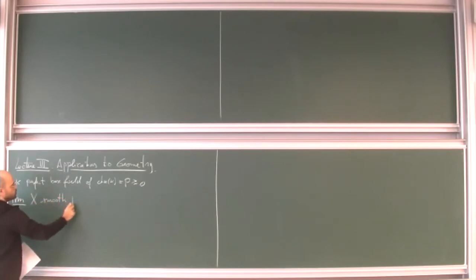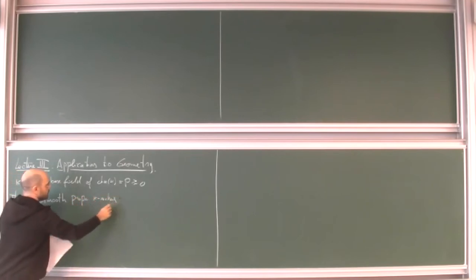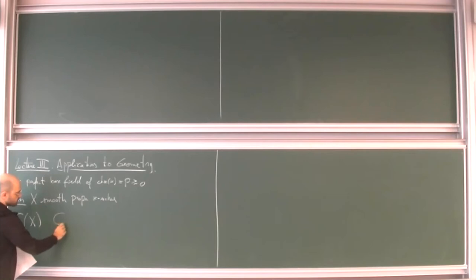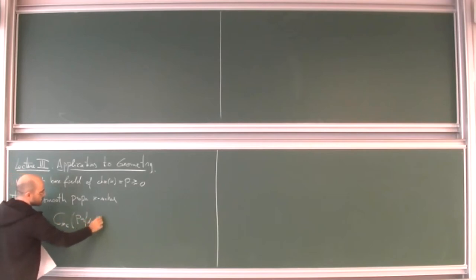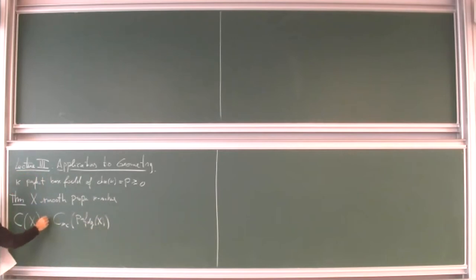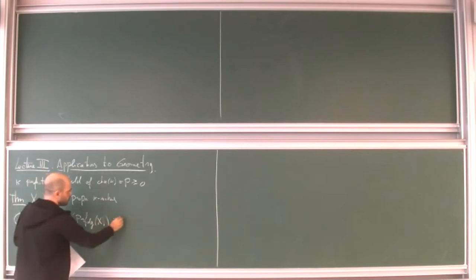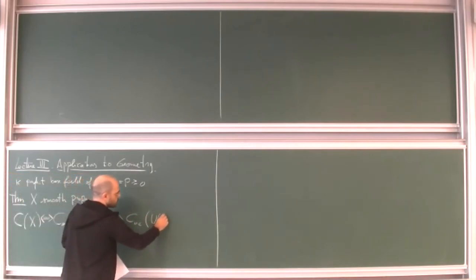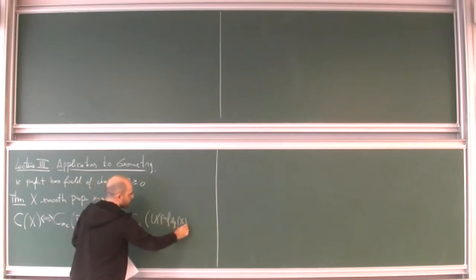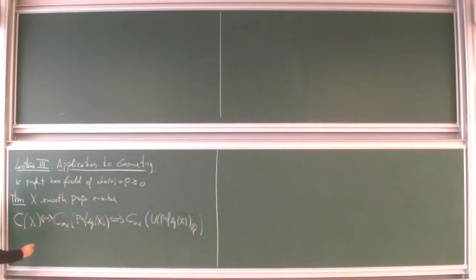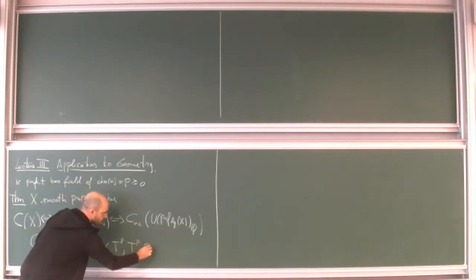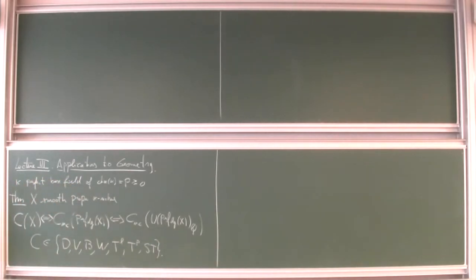In the first lecture we saw the theorem saying that if you have a smooth proper K-scheme, you can look at the celebrated conjectures for X and their non-commutative counterparts for the associated DG category of perfect complexes — we saw that there is no difference between these two. We can more generally consider not solely the DG category but also the corresponding non-commutative Chow motive, even with rational coefficients, for any conjecture: Grothendieck, Voevodsky, Beilinson, Weil, and all variants of the Tate conjecture.